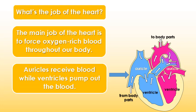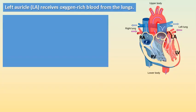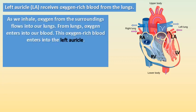The main job of the heart is to force oxygen-rich blood throughout our body. Auricles receive blood while ventricles pump out the blood.